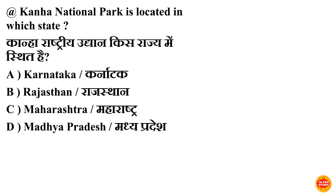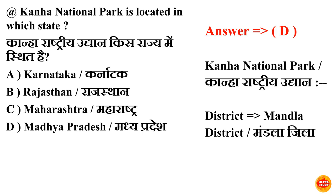Next question: Kanha National Park is located in which state? Kanha Rashtriya Udyan kis rajya mein sthit hai? Option D is correct — Madhya Pradesh. Kanha Rashtriya Udyan Madhya Pradesh mein sthit hai, district Mandla district. Kanha Rashtriya Udyan Madhya Pradesh ke Mandla district mein sthit hai.